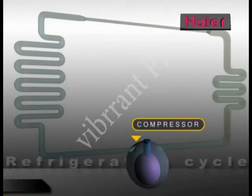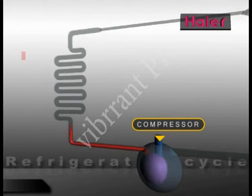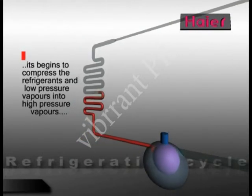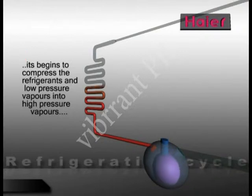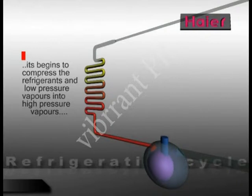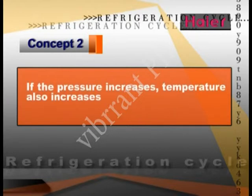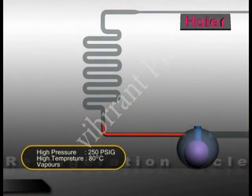As the compressor is switched on, it begins to compress the refrigerant and converts the low pressure vapors into high pressure vapors. As per Concept No. 2 discussed earlier, as the compressor compresses the refrigerant, the temperature of these high pressure vapors also increases.